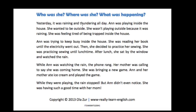Let's do a little bit of reading. Questions: who was she, where was she, and what was happening? Yesterday it was raining and thundering all day. She was playing inside the house. She wanted to be outside but she wasn't playing outside because it was raining. She was feeling tired of being trapped inside and was trying to keep busy. She was reading her book until the electricity went out, then she decided to practice her sewing.